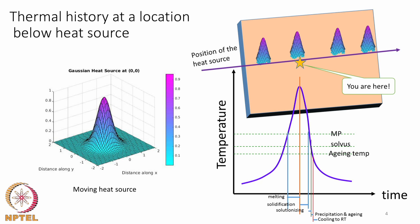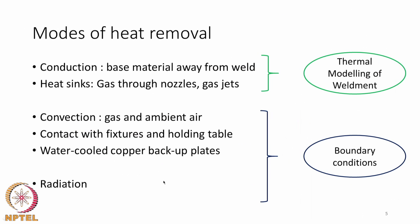Heat removal in the weldment occurs mainly by conduction — the rest of the material acts as a heat sink — which will be covered in thermal modeling. Heat removal through gas nozzles or gas jets are also heat sinks; as discussed in the previous lecture, heat sinks are regarded as heat sources with a negative sign for the heat flux. So those will not be covered in this lecture.